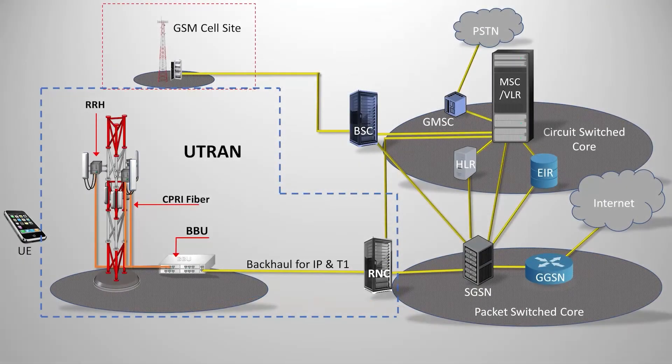The network architecture for UMTS is divided, much like GSM, into three main subsystems: user equipment, the radio network, and the core network. The most notable change is the radio network, now referred to as a Universal Terrestrial Radio Access Network, or UTRAN. There are going to be a ton of acronyms, so buckle up.